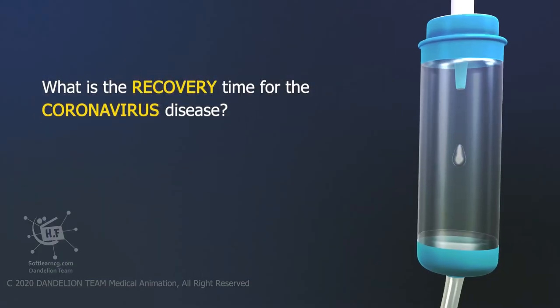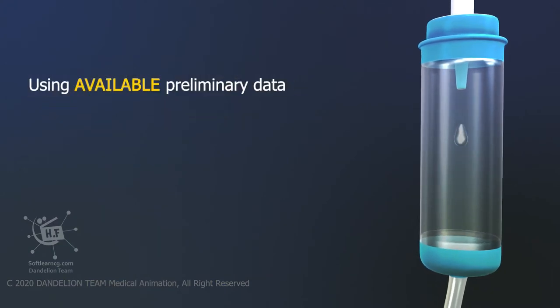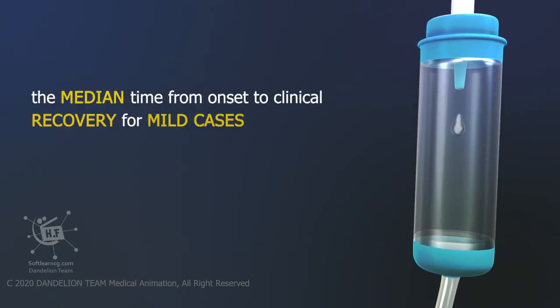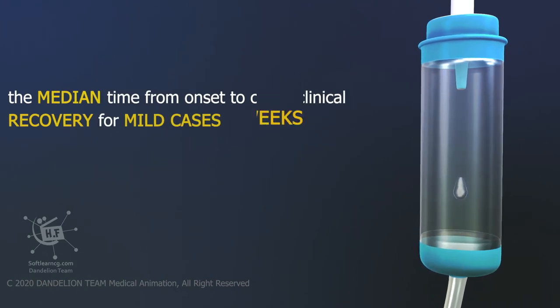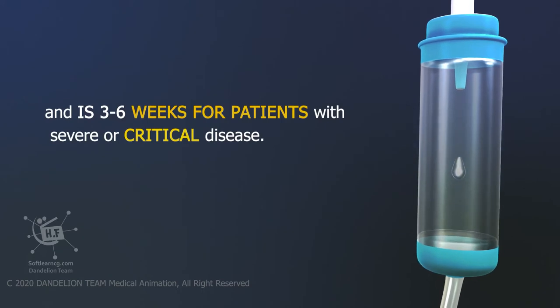What is the recovery time for the coronavirus disease? Using available preliminary data, the median time from onset to clinical recovery for mild cases is approximately two weeks and is 3-6 weeks for patients with severe or critical disease.